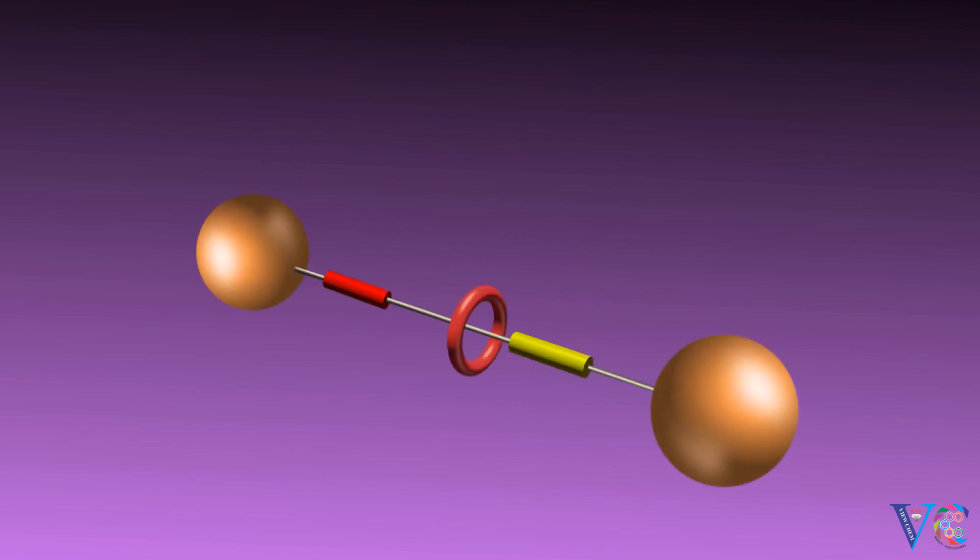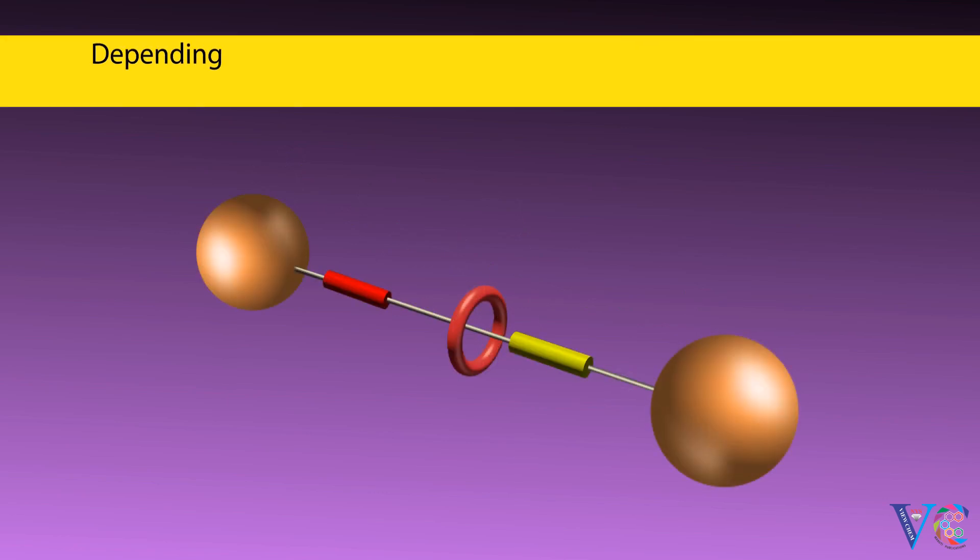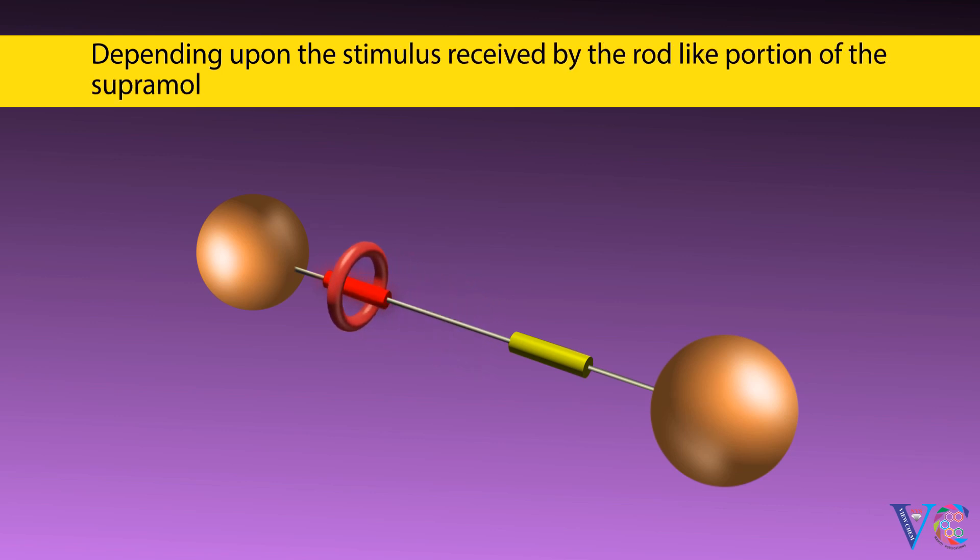The molecule may look like this. Rotaxane molecule may be visualized as: depending upon the stimulus received by the rod-like portion of the supermolecule, the macrocyclic ring can move.